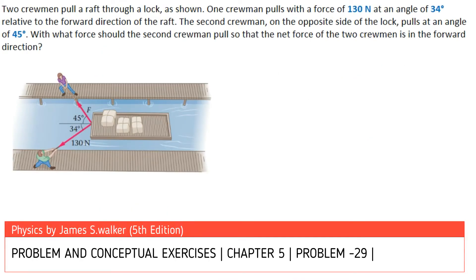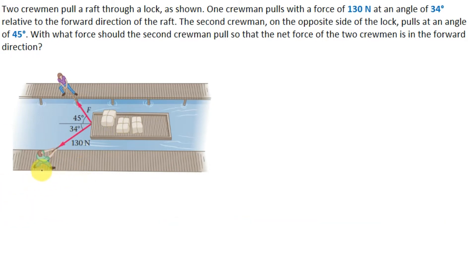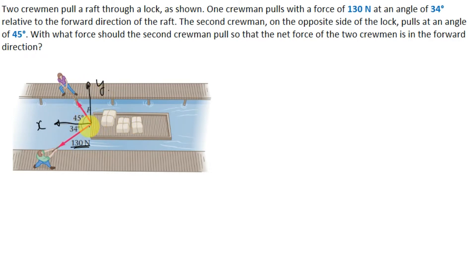In this question, two crewmen are pulling a raft through a lock. One crewman pulls with a force of 130 Newtons at an angle of 34 degrees relative to the forward direction. Let the forward direction be X and the perpendicular direction be Y.